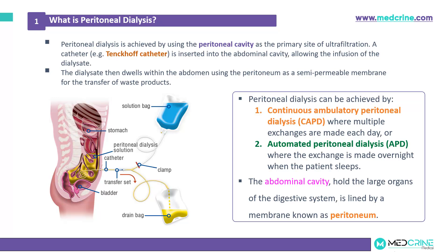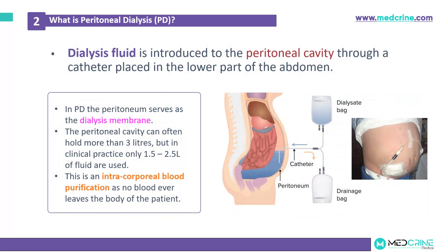The abdominal cavity usually holds a large number of organs of the digestive system and is lined by a thin membrane known as the peritoneum. A dialysis fluid or dialysate is introduced into the peritoneal cavity through a catheter that is placed usually on the lower part of the abdomen, as shown in this image. In this type of dialysis, the peritoneum serves as the dialyzing membrane.